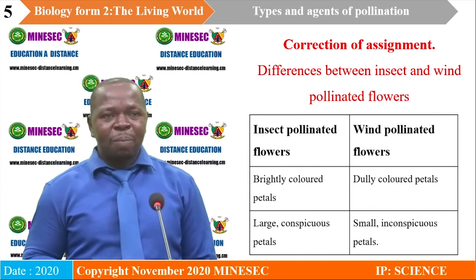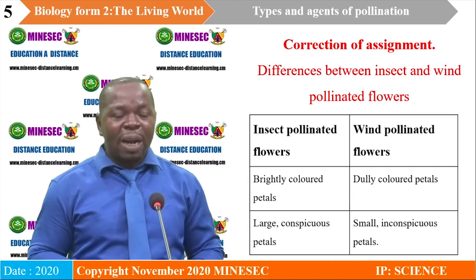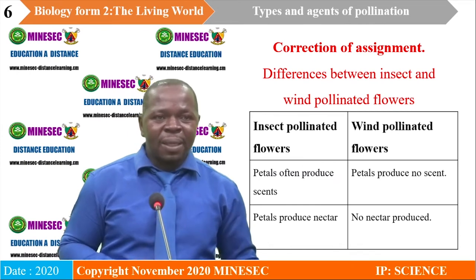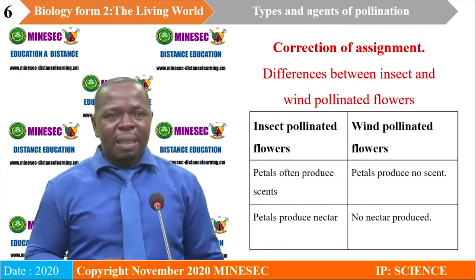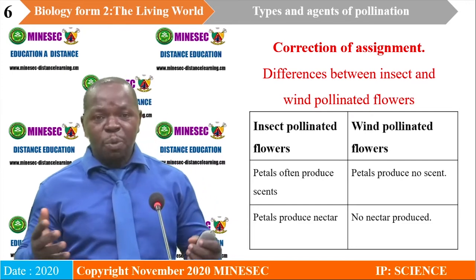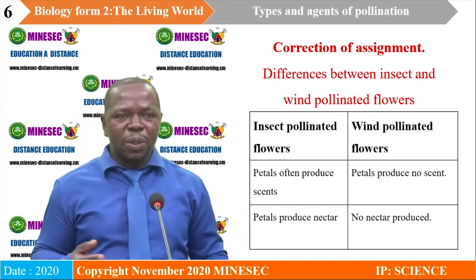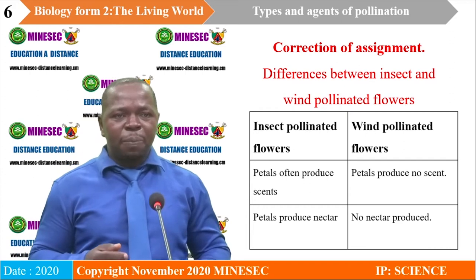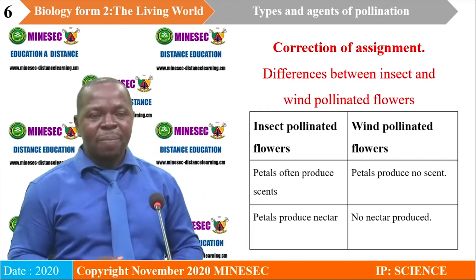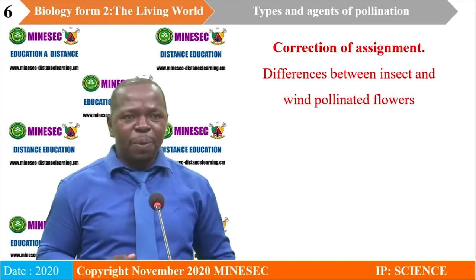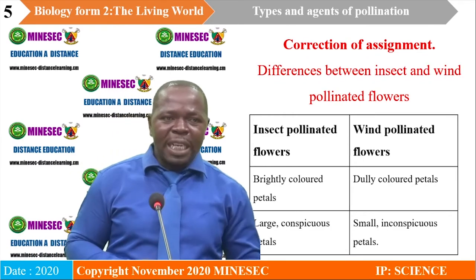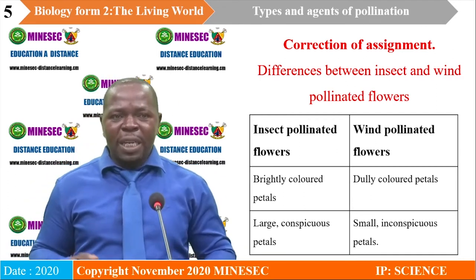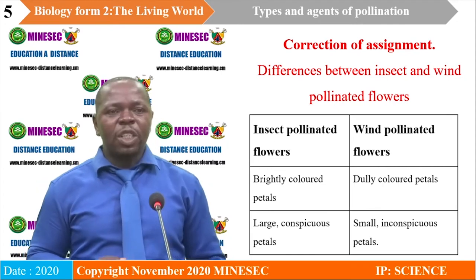Insect-pollinated flowers have brightly colored petals, while wind-pollinated flowers have dully colored petals. In insect-pollinated flowers, their petals are often scented, while wind-pollinated flowers produce no scent. Insect-pollinated flowers have large conspicuous petals, while wind-pollinated flowers have small inconspicuous petals.